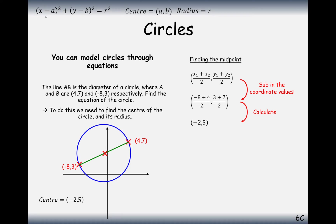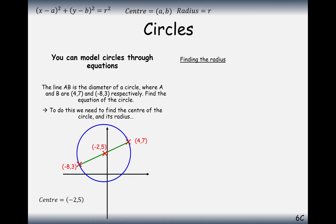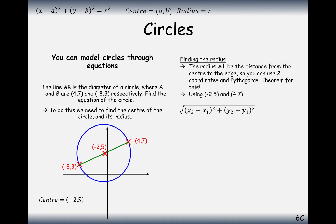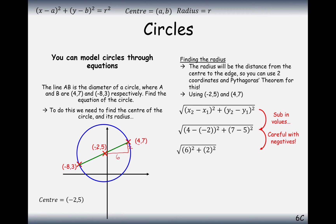That gives us part of the equation, but we still need the radius. We find the distance between the center (−2, 5) and one endpoint, say (4, 7). Going along the x-axis from −2 to 4 is a distance of 6, and from 5 to 7 on the y-axis is a distance of 2. Applying Pythagoras: 6² + 2² = 36 + 4 = 40, so the radius is the square root of 40.